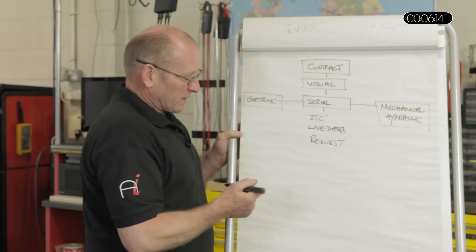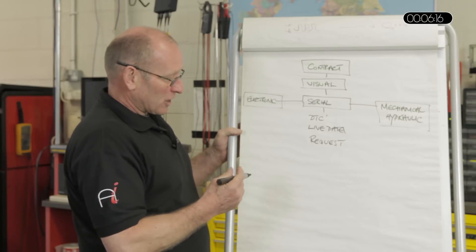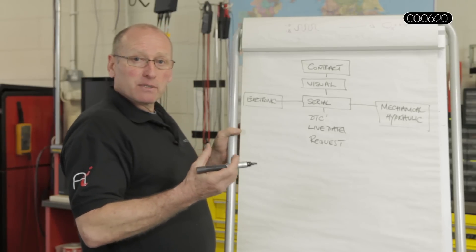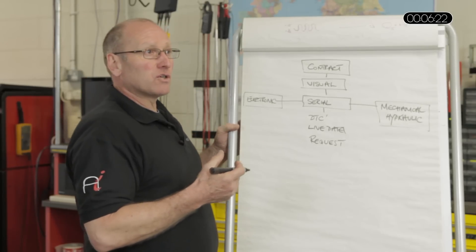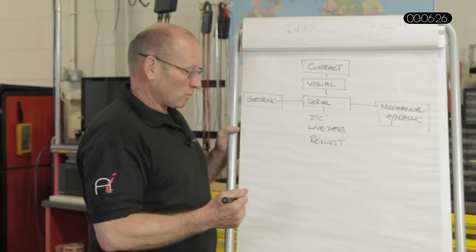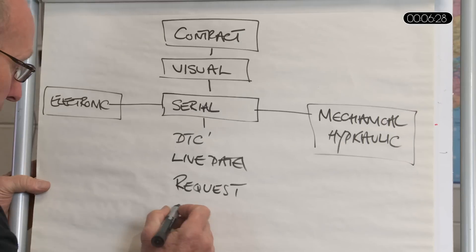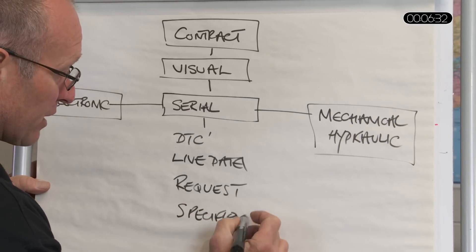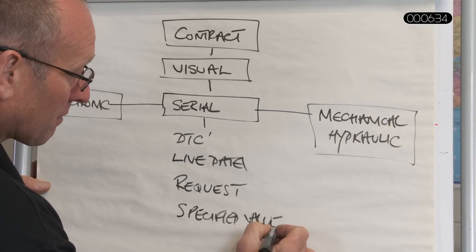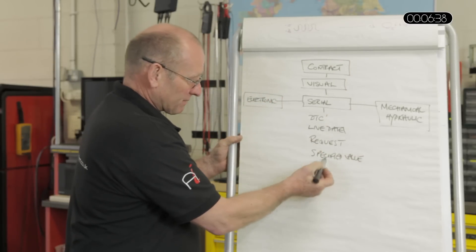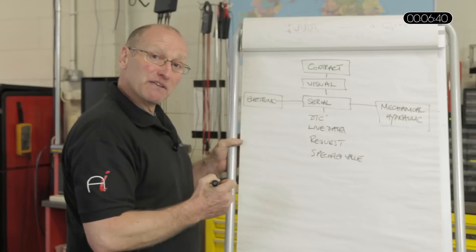So we need a request. We then look at the specified values. This is the software, the setup tables or basic parameters from which the system operates. So the specified value is contained within the software parameters. So we have a request. It then compares that request with the specified values.